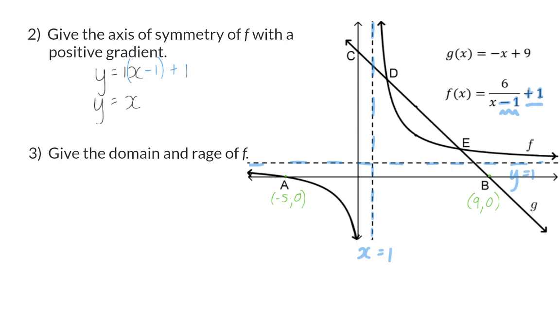So for our domain, the hyperbola consists of all the x values, x elements of real numbers, but can never be equal to the asymptote of 1.